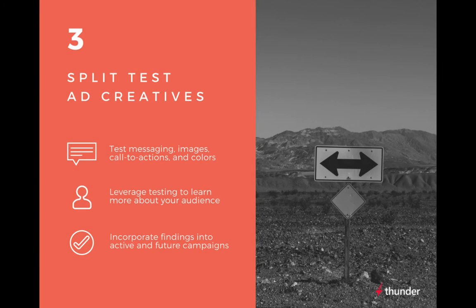Third, split test ad creatives. Test various elements to learn the most effective and high-performing aspects of your ad. Focusing on one element at a time, experiment with different messaging, images, calls to action, and colors. Evaluate what works well, document the results, and continue to build on top of high-performing ads. Even subtle changes in your programmatic display creative can produce vastly different results.